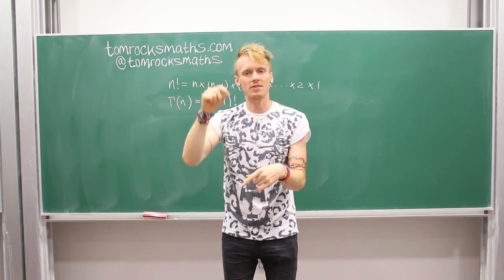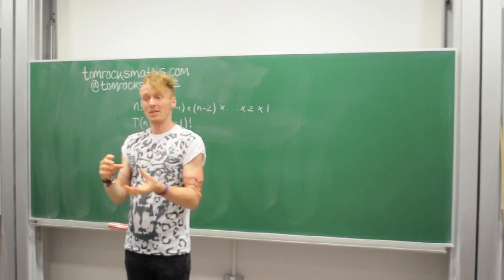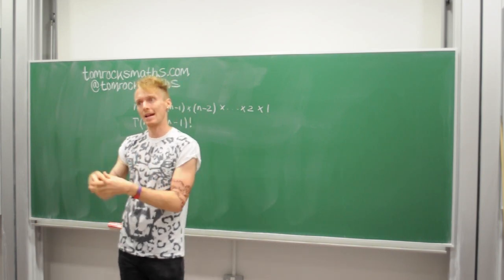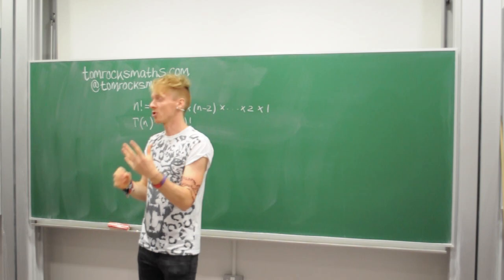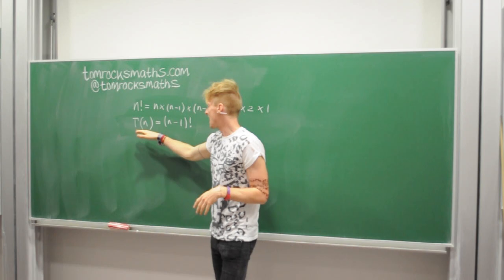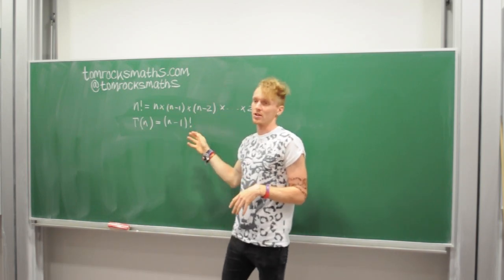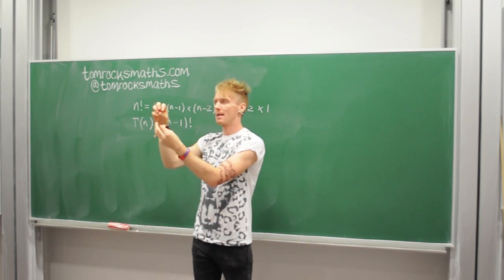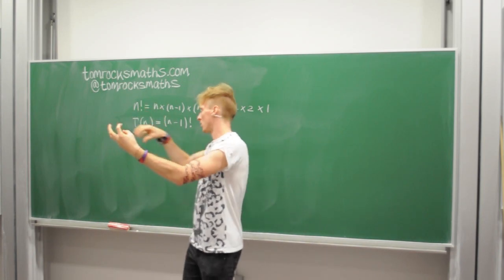So 5 factorial is 5 times 4 times 3 times 2 times 1. Now the gamma function, when applied to a positive whole number, like for the factorial function, is just defined by n minus 1 factorial. So gamma of n is just n minus 1 factorial. So you take your number n, take away 1 and then multiply that new number by all the ones below it.